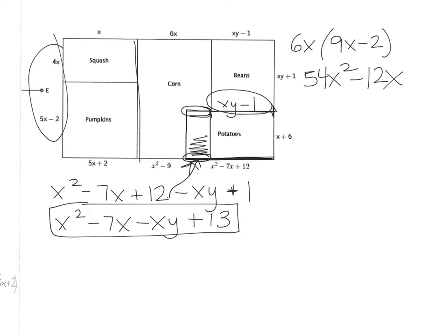So now I have to find the area of this piece here, which is going to be the little piece times the x plus 6. So I'm now going to do the x plus 6 times x squared minus 7x minus xy plus 13, right? So I'm going to multiply that. That's now going to give me the area of this. So when I multiply that...